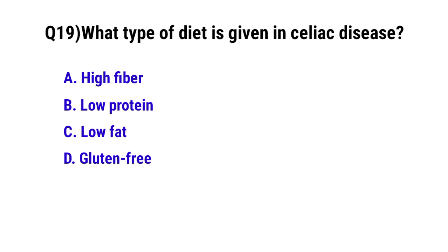Question No. 19. What type of diet is given in celiac disease? The correct option is D: Gluten free.